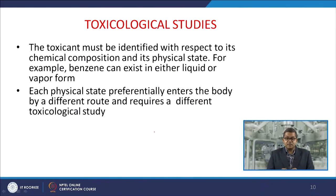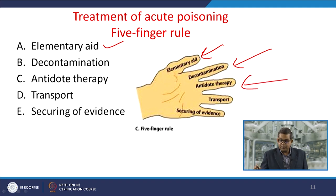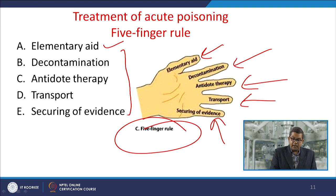Each physical state preferentially enters the body by a different route and requires different toxicological studies. For treatment of acute poisoning, you must remember the five-finger rule: elementary aid, decontamination, antidote therapy, transportation to a safe place, and securing the evidence. Each and every aspect is essential.